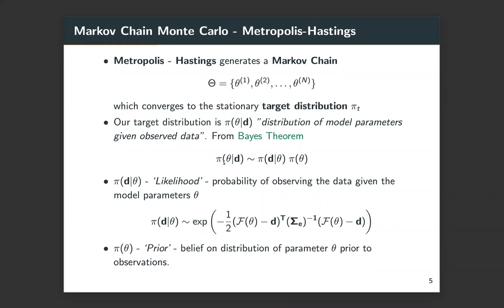Applying Bayes: the probability of theta given D is proportional to the probability of observing the data given a fixed set of parameters - we call this the likelihood - times the prior, the probability of observing those parameters with your prior knowledge. There's a proportionality relationship because there's a normalizing constant which ensures this integrates to one over all of theta, but in Metropolis-Hastings methods we don't need to worry about that. The likelihood is Gaussian, so we can write it as an exact multivariate Gaussian with this covariance.